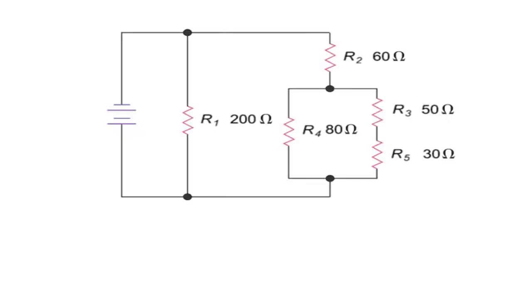Determining the resistance of a more complex series parallel circuit requires reducing the overall circuit and adding together all the combined resistance values. In this more complex series parallel circuit example, let's begin by combining the resistance of the two resistors farthest from the source, R3 and R5. Since these resistors are in series, we can simply add their values, 50 ohms plus 30 ohms to get 80 ohms.